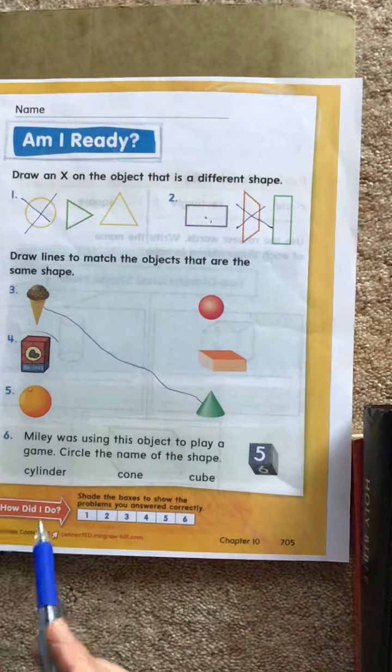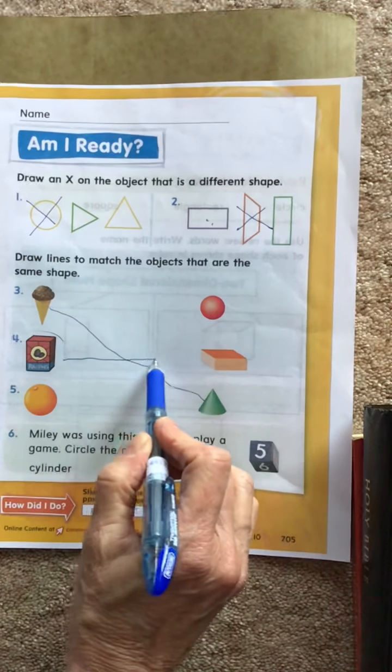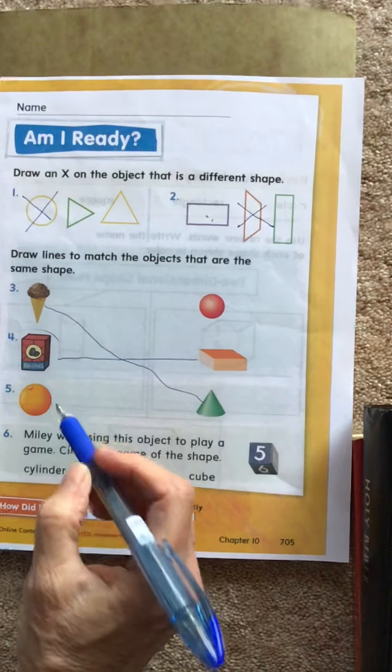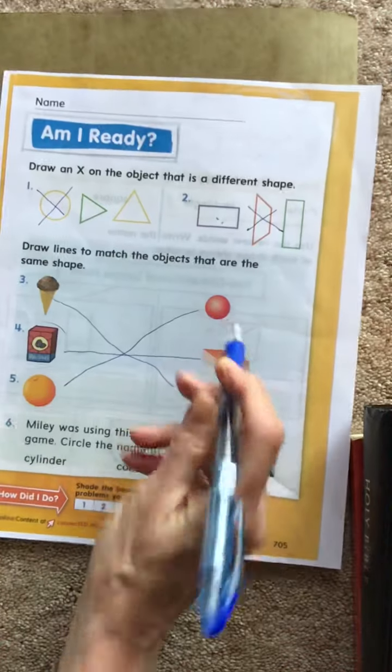Okay, see this? It's shaped a lot like that, and an orange is shaped a lot like a sphere.